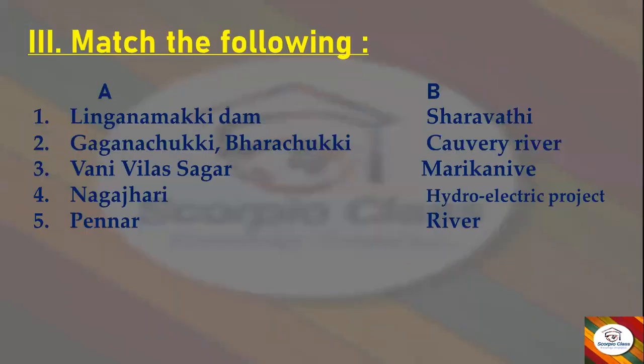In Column A we have the questions and in Column B the correct answers. First: Linganamakki Dam — Answer: Sharavati. Second: Gaganachukki and Barachukki — Answer: River Kaveri. Third: Vani Vilas Sagar — Answer: Marikaniwe. Fourth: Nagathari — Answer: Hydroelectric Project. Fifth: Pennar — Answer: River. These are the matched answers for the exercise.